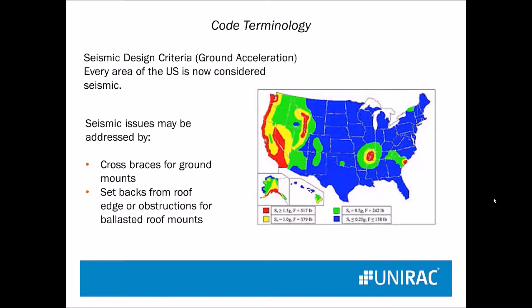Seismic design criteria — ground acceleration or earthquakes. It's now considered that the entire US has the possibility of some seismic activity. The way to handle that with a ground mount is to use cross braces so that the seismic activity, which could come from any direction, can be at least checked. On a rooftop with a ballast system, it may be handled by setbacks from the edge of the roof or any obstructions.